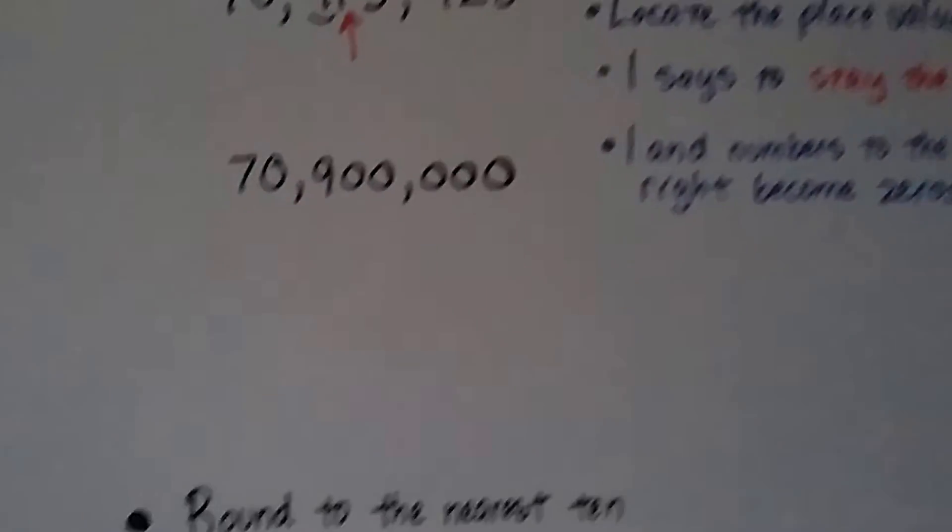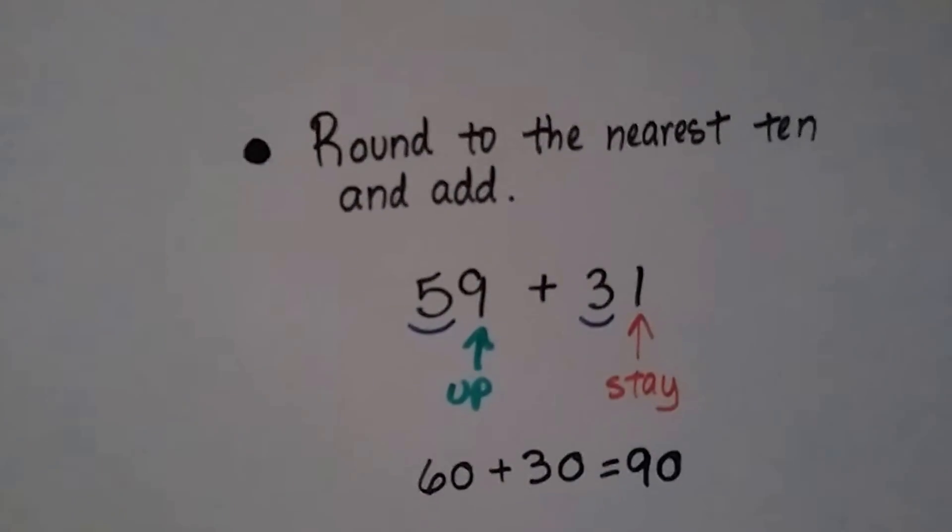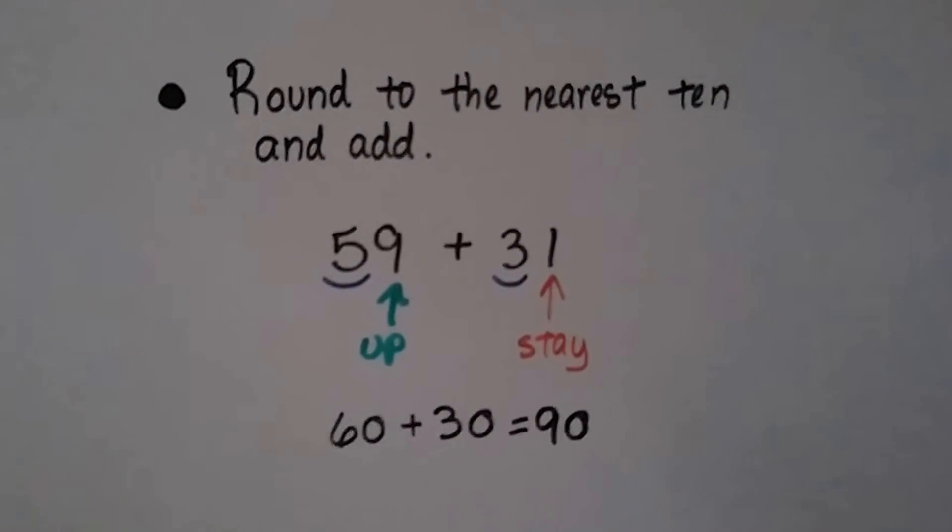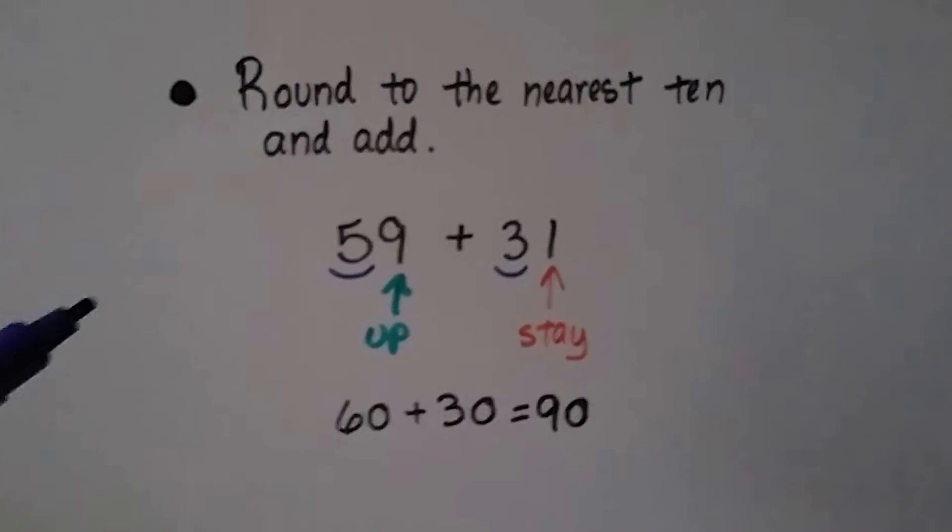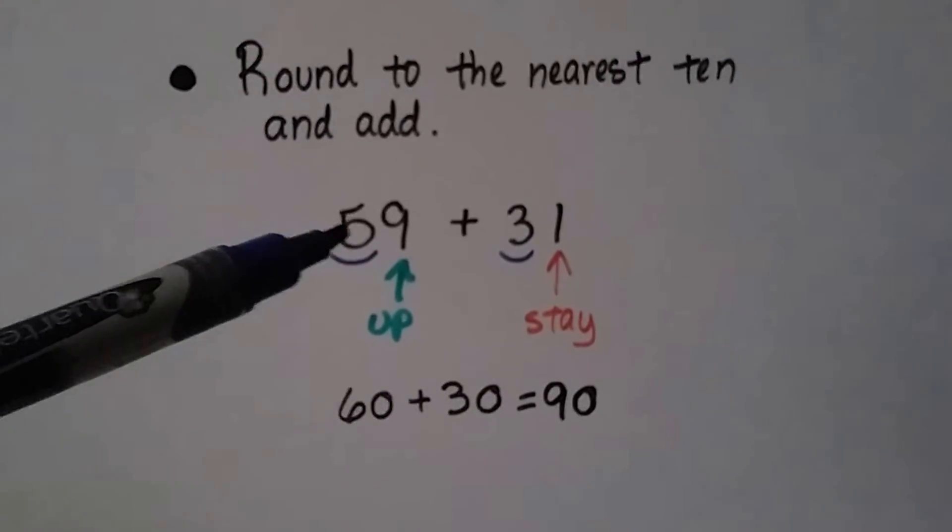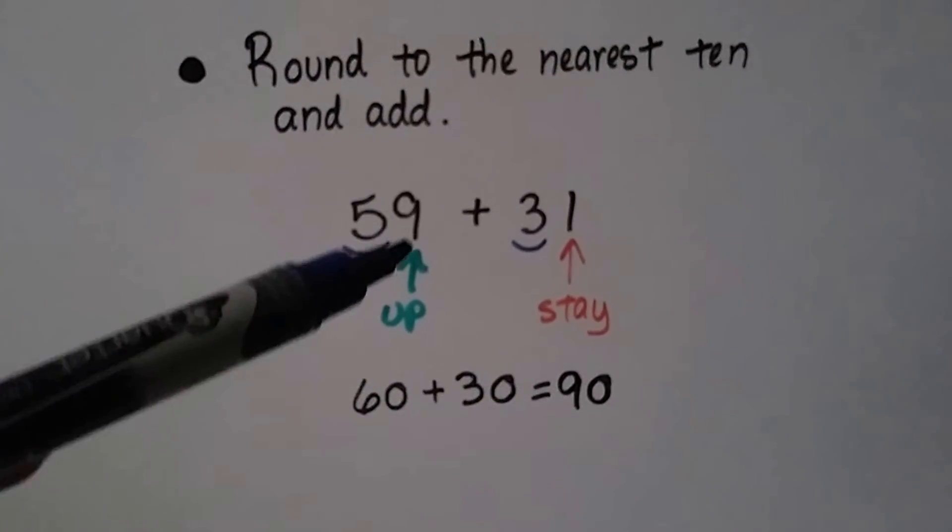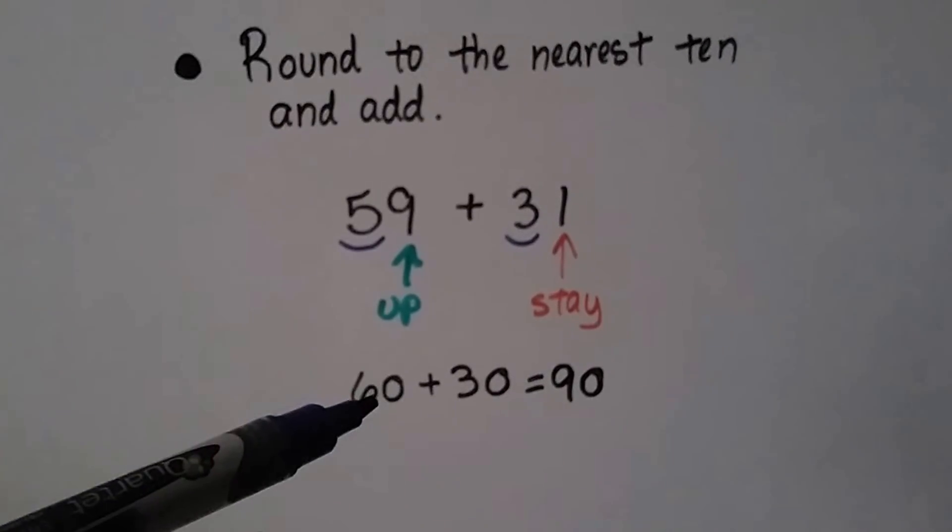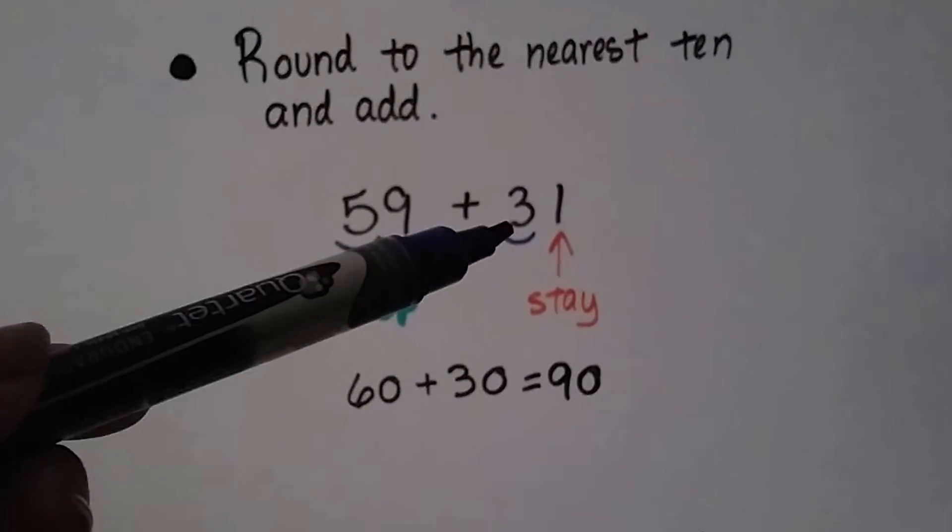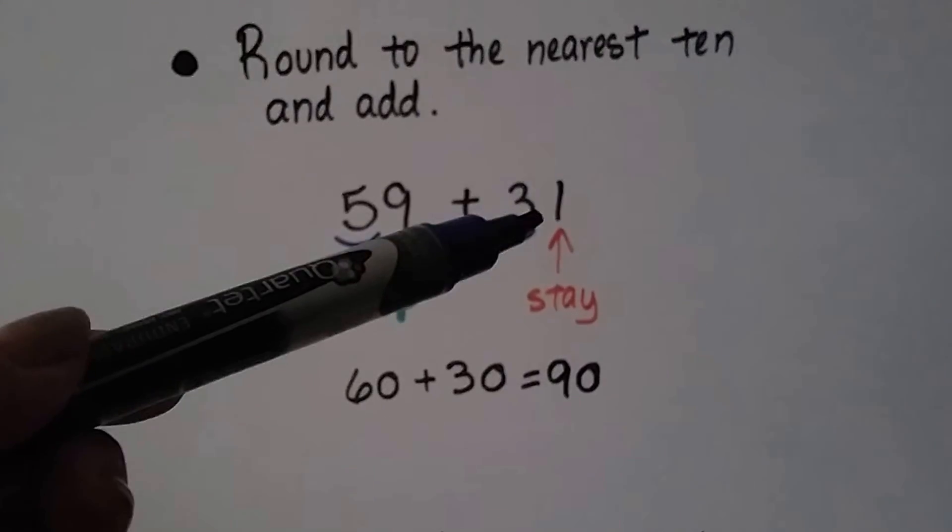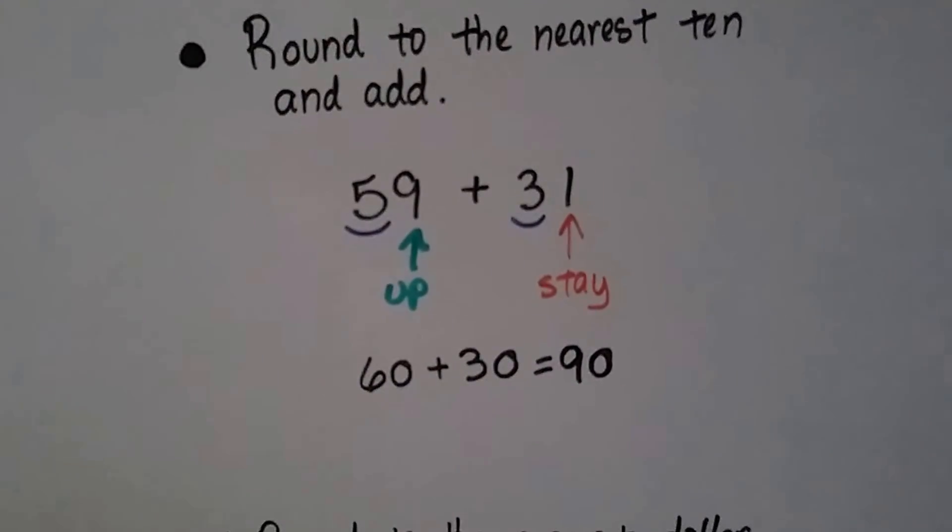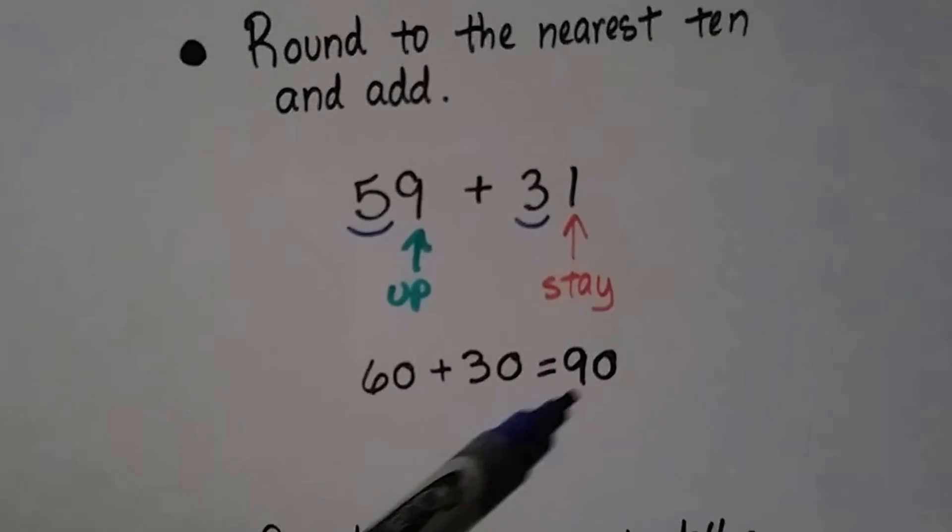So it's useful to round numbers. We could round numbers to the nearest 10 and then add them. If we're at the grocery store, that could really help us if we're just trying to figure out how much we're spending. 59 plus 31. That 9 tells the 5 to go up to a 6 and it becomes a 0. So we have 60. This 3, we look to the right. The 1 tells the 3 to stay the same. So it rounds to 30. We have 60 plus 30. It's about 90.